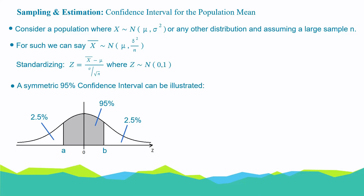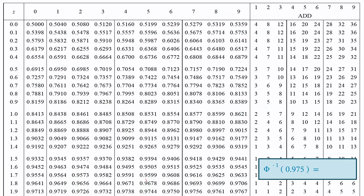How can we find the values of a and b for a 95% confidence interval? We know that phi of b is the area to the left of b. The area to the left of b constitutes 95% plus 2.5% of the area under the graph, which is 97.5%. So, we can say that phi(b) is equal to 0.975. And we can find b by saying phi inverse of 0.975. If we go to the tables, we'll discover that this gives us 1.96.